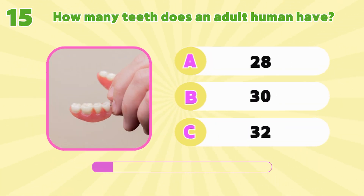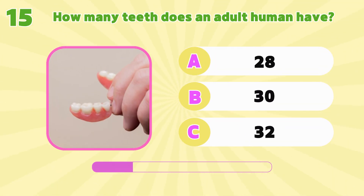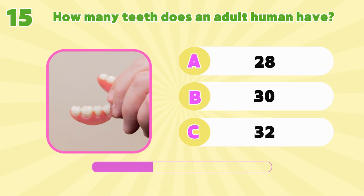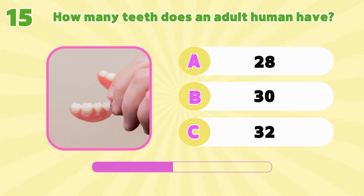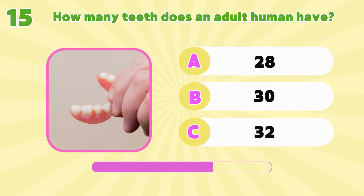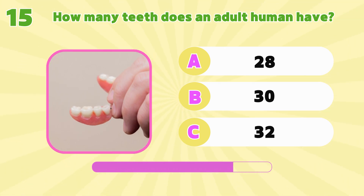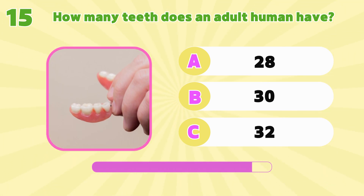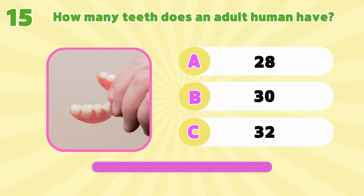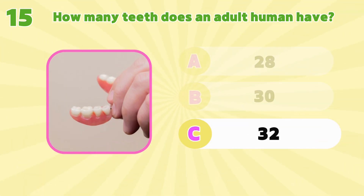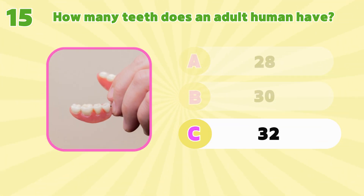How many teeth does an adult human have? 28, 30 or 32? It's 32!